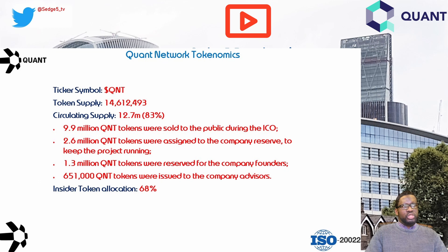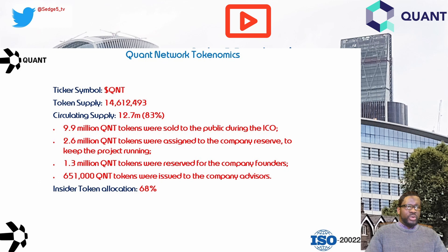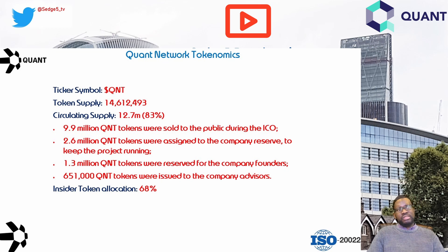9.9 million QNT tokens were sold to the public during the ICO. 2.6 million were assigned to the company reserve to keep the project running. 1.3 million were reserved for company founders, and 651,000 were issued to company advisors. Inside the token allocation amounts to 68%, which we consider quite high. Our scope for insider token allocation includes tokens held by project advisors, the team, any reserves the team can control, and early seed investors — all classified as insiders.